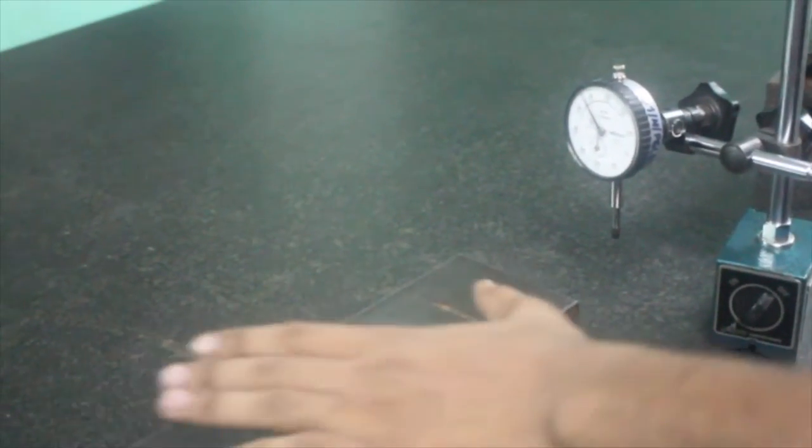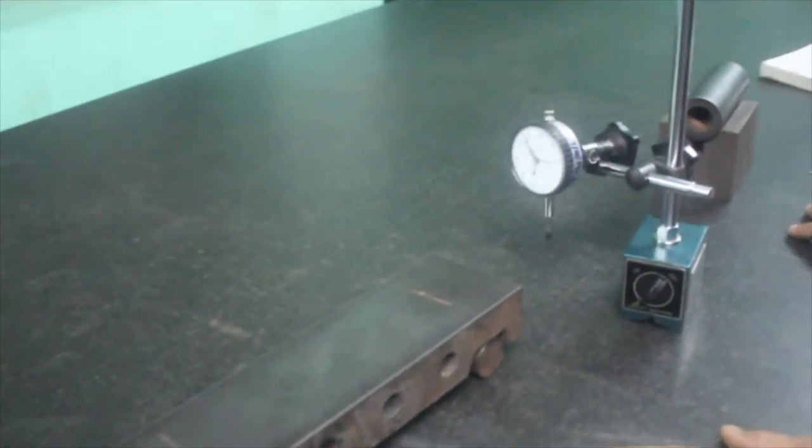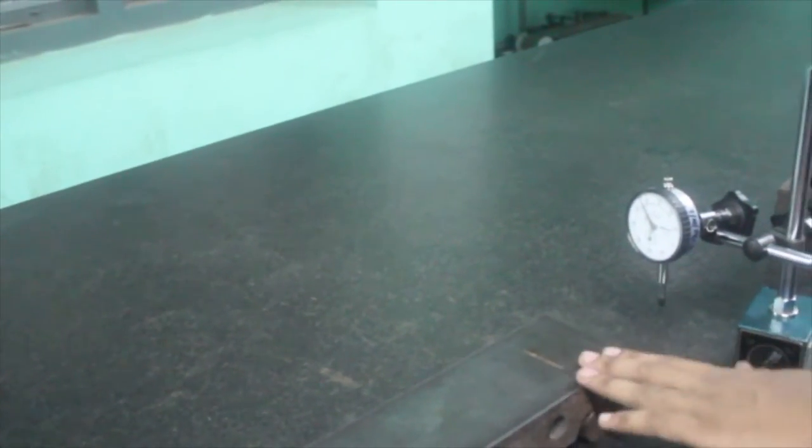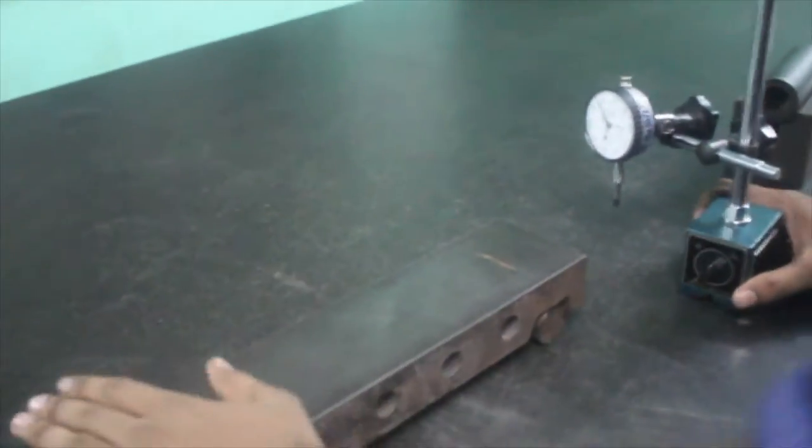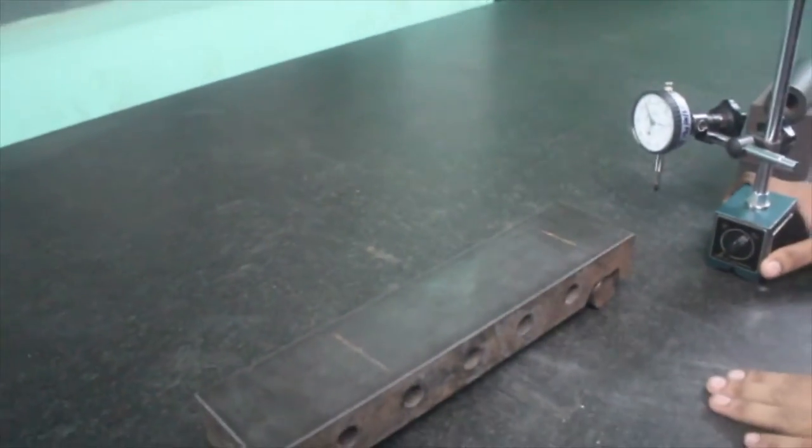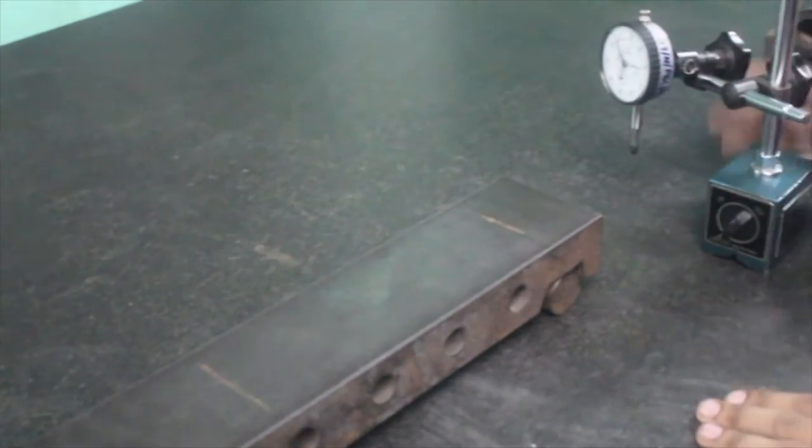Similarly, the sine bar is usually used as a reference to find the angle, so the surface of this sine bar should be uniform. Here we are going to check the surface of this sine bar by using a mechanical comparator.